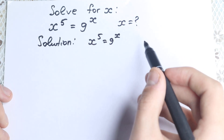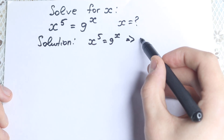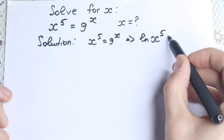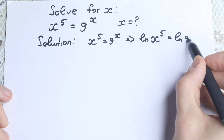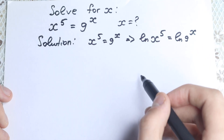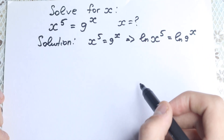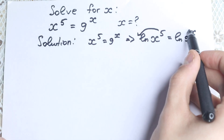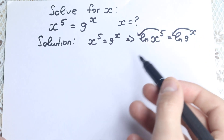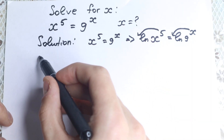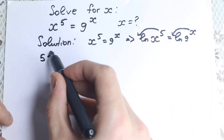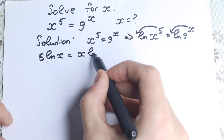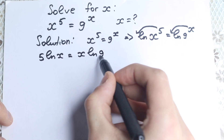If we take natural log on both sides, we go with natural log — natural log of x to the fifth power on the left-hand side equal to natural log of 9 to the x. We just take natural log on both sides. Right now, the 5 jumps out, this x jumps out, and that's why we do this with log. We will have 5·ln(x) equal to x·ln(9).